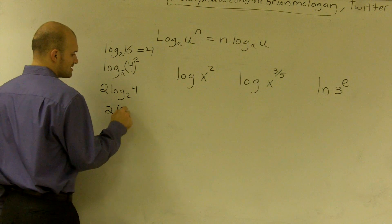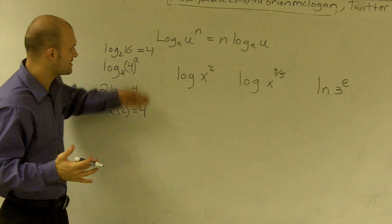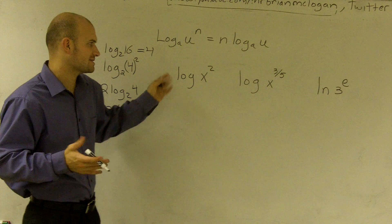So therefore, I have 2 times 2, which equals 4. So you guys can see with real numbers, this works. So just apply it with the rest of these.